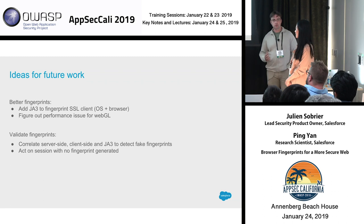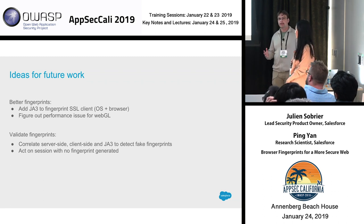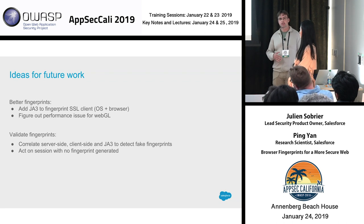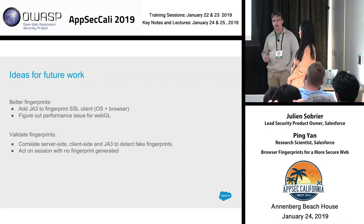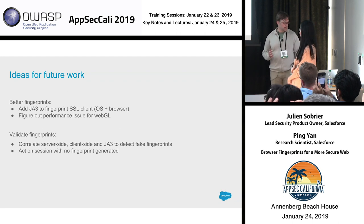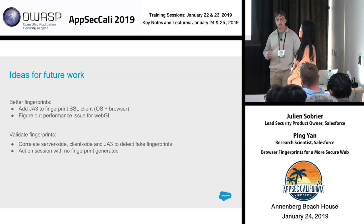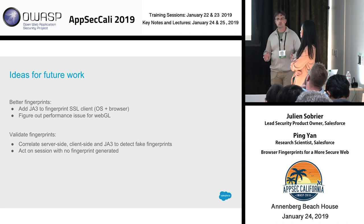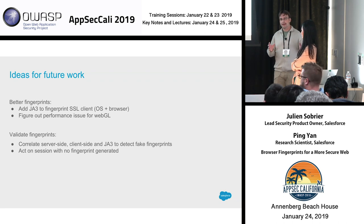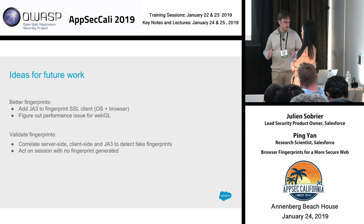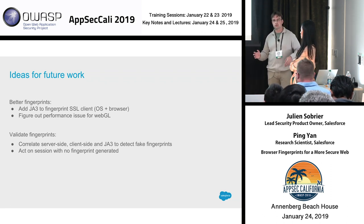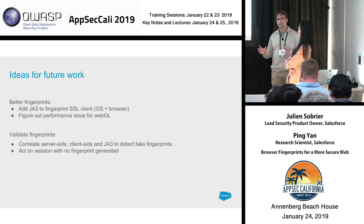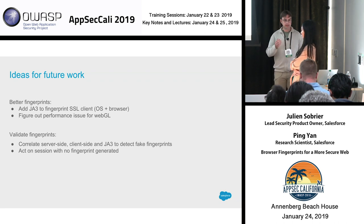Some things we're looking to improve: one is adding more data. We wanted to add JA3, an open source project from Salesforce that allows you to fingerprint the SSL connection from the client and can identify the combination of browser and OS that you are running. We would also like to bring back WebGL because it's so powerful. JA3 fingerprints the SSL layer, which is very hard to fake, so we would like to correlate information from the client side — which can be faked — with server-side JA3 information to make sure fingerprints look legitimate.